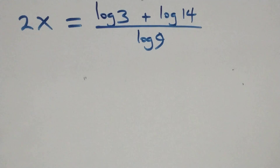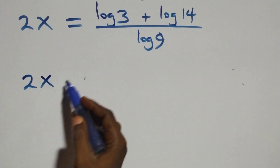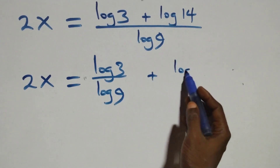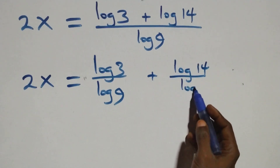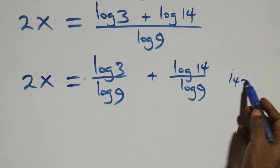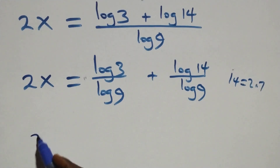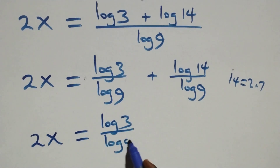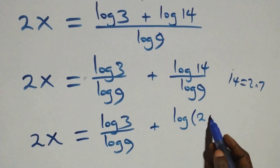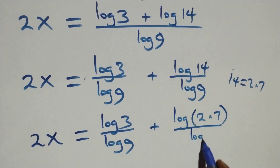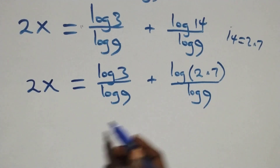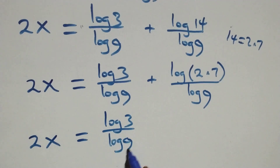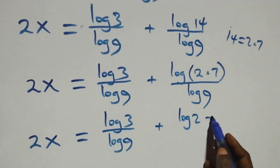Also from here, we can express 14 as 2 times 7. Then, next step, we separate this into two fractions and we have 2x equals log 3 over log 9, plus log 14 over log 9. Applying the product rule again, log 14 becomes log 2 plus log 7, so we have 2x equals log 3 over log 9, plus log 2 plus log 7, over log 9.